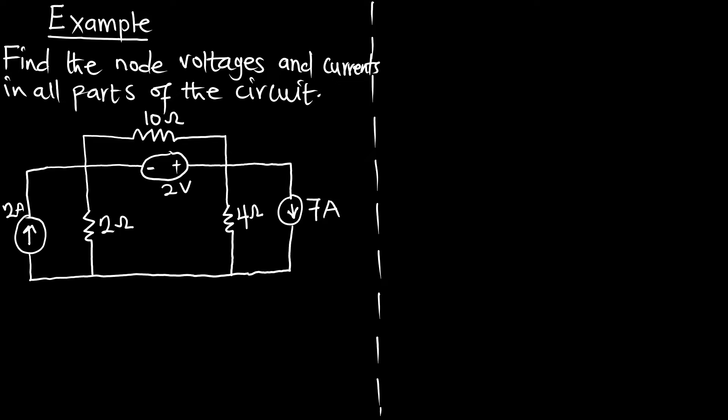In this episode, we are going to solve this problem. It says: find the node voltages and current in all parts of the circuit.